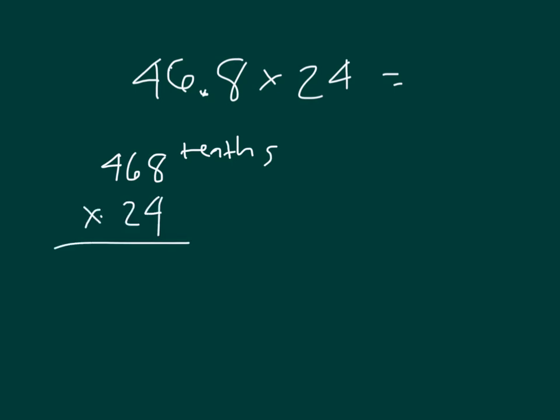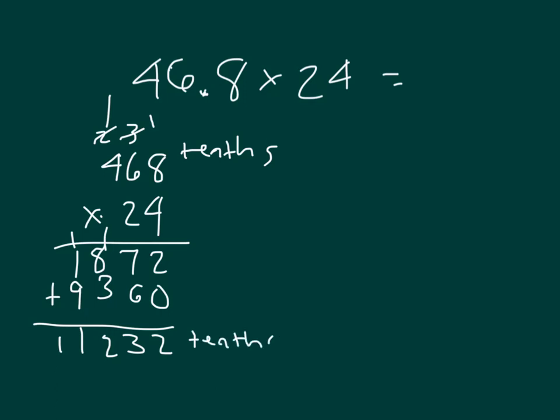So 8 times 4 is 32, regroup of 3. 4 times 6 is 24, plus 3 is 27. 4 times 4 is 16, plus 2 is 18. Cross out my regroups, place a 0, place a 6, then I can place a 3, and then I can place a 9. Adding those together, I get 11,232 tenths, so that my answer in standard form should be 1,123.2.